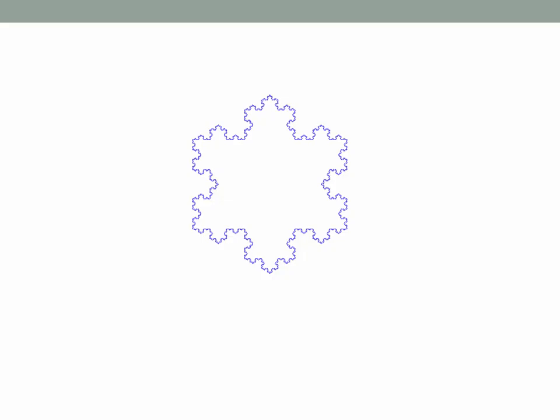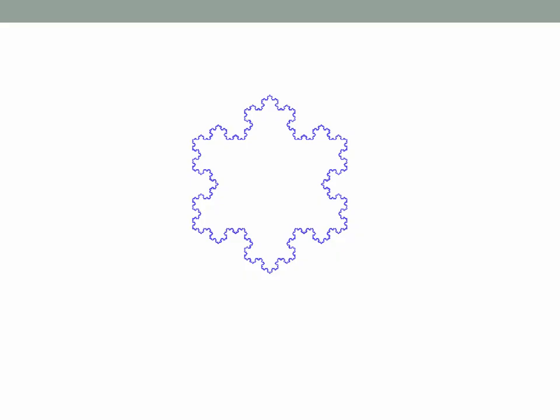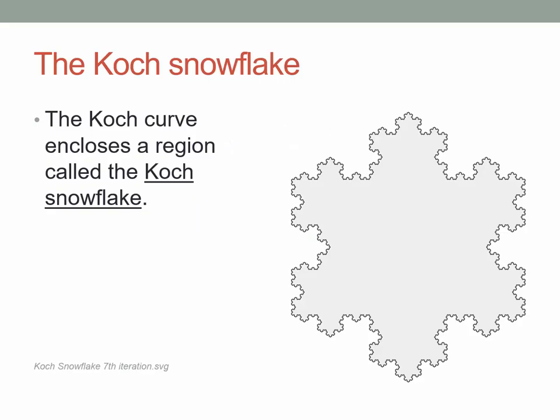Here we're just seeing an animation of the steps I just went through, so you can visualize it all at once. What will be true at every stage, and also in the limit with the Koch curve, is that it encloses a region in the plane. We can imagine coloring it in, and the region inside is called the Koch snowflake. So the curve we constructed is called the Koch curve, and the interior — a two-dimensional region with an area — is called the Koch snowflake.